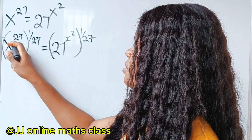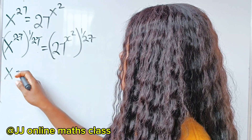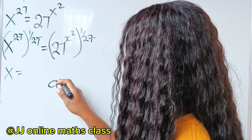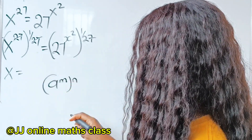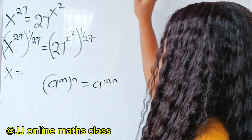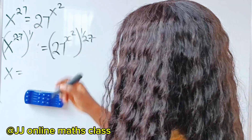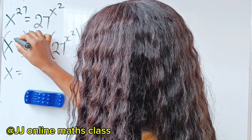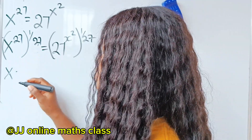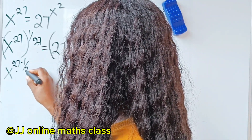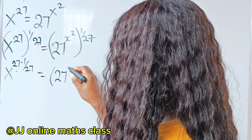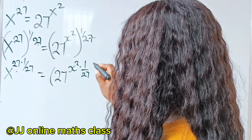Now, when this cancels this, you are left with x. But why did I cancel? I want you to recall that a to the power of m, raised to the power of n, is equal to a to the power of m multiplied by n. So that simply means that the left-hand side is equal to x to the power of 27 multiplied by 1 over 27.